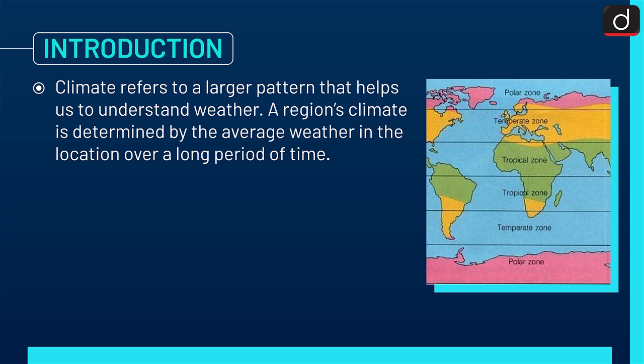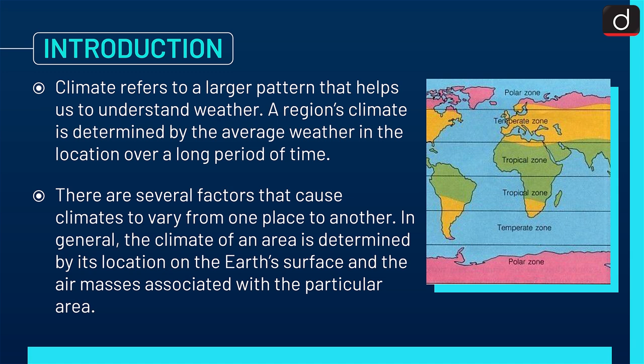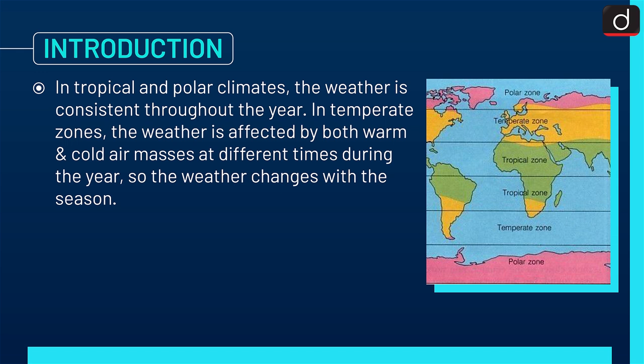Climate refers to a larger pattern that helps us to understand weather. A region's climate is determined by the average weather in the location over a long period of time. There are several factors that cause climates to vary from one place to another. In general, the climate of an area is determined by its location on the Earth's surface and the air masses associated with the particular area. In tropical and polar climates, the weather is consistent throughout the year. In temperate zones, the weather is affected by both warm and cold air masses at different times during the year, so the weather changes with the seasons.